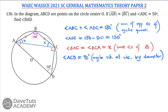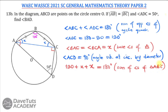Since we have 130 degrees plus angle x plus angle x — these three are the angles of triangle ABC — the sum of angles of a triangle is 180 degrees. So 2x equals 180 minus 130, which is 50, and x equals 25 degrees.